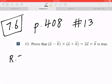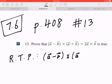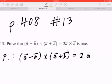So step one, write down require to prove: vector a minus b cross vector a plus b equals two times vector a cross vector b.